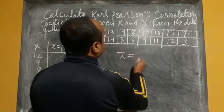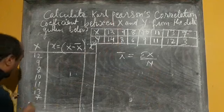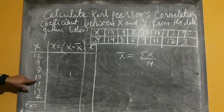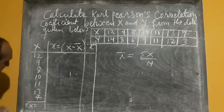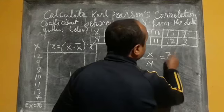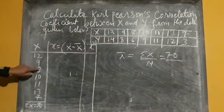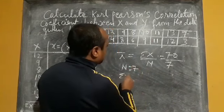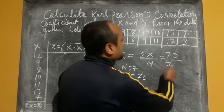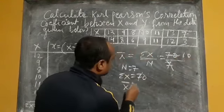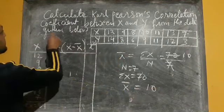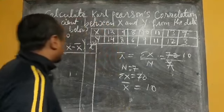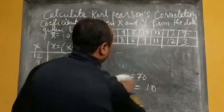Mean is represented by x-bar equals summation x by n. Adding the x values: 12 + 9 + 8 + 10 + 11 + 13 + 7, we get summation x equals 70. The number of observations n equals 7. So x-bar equals 70 divided by 7, which gives x-bar equals 10.